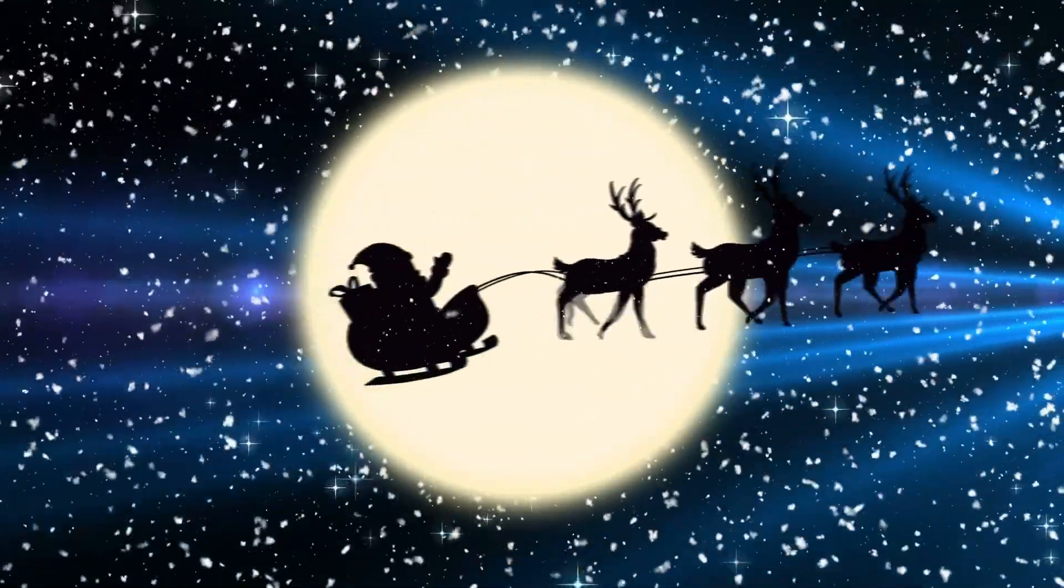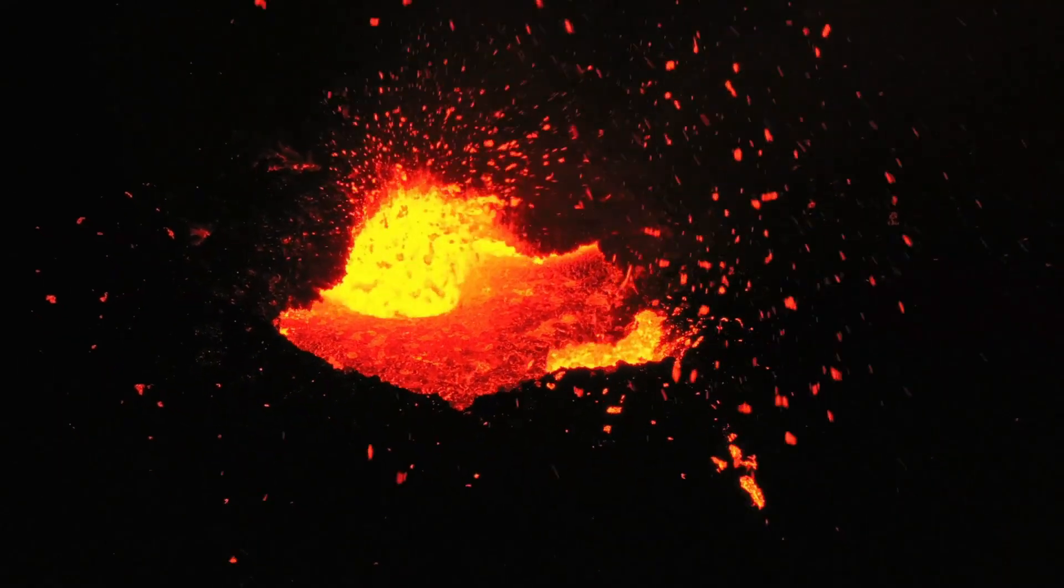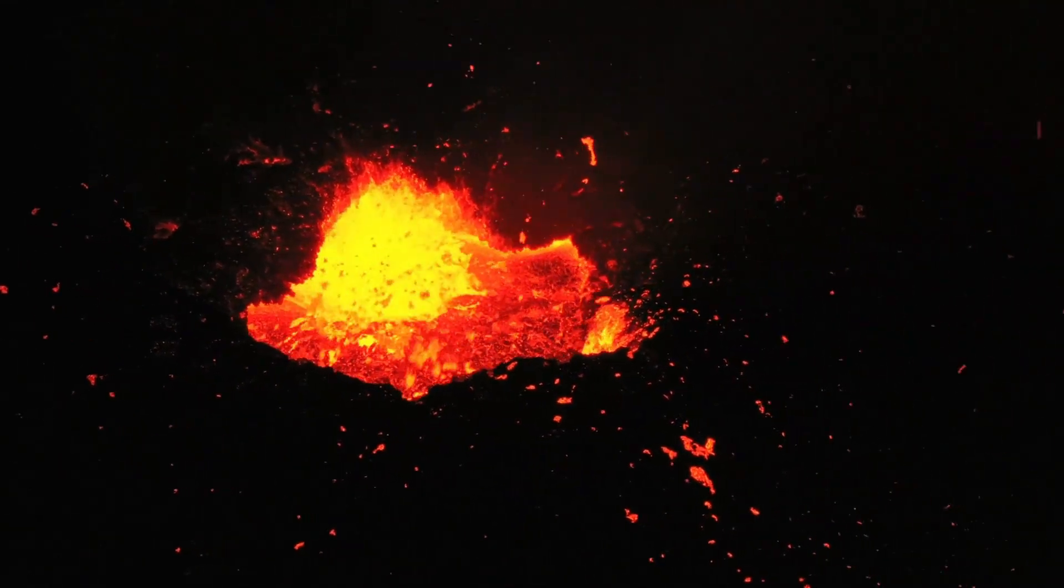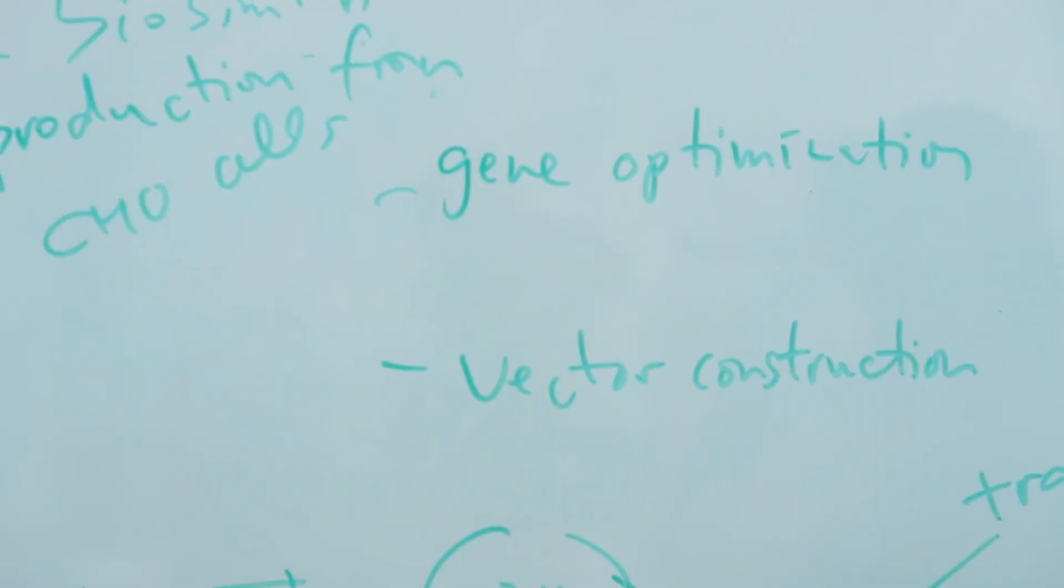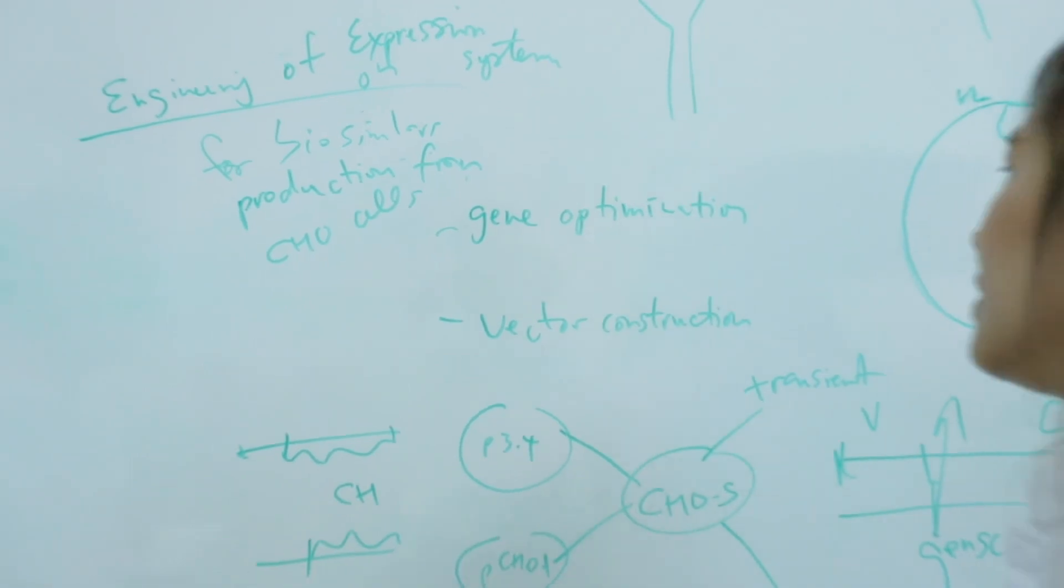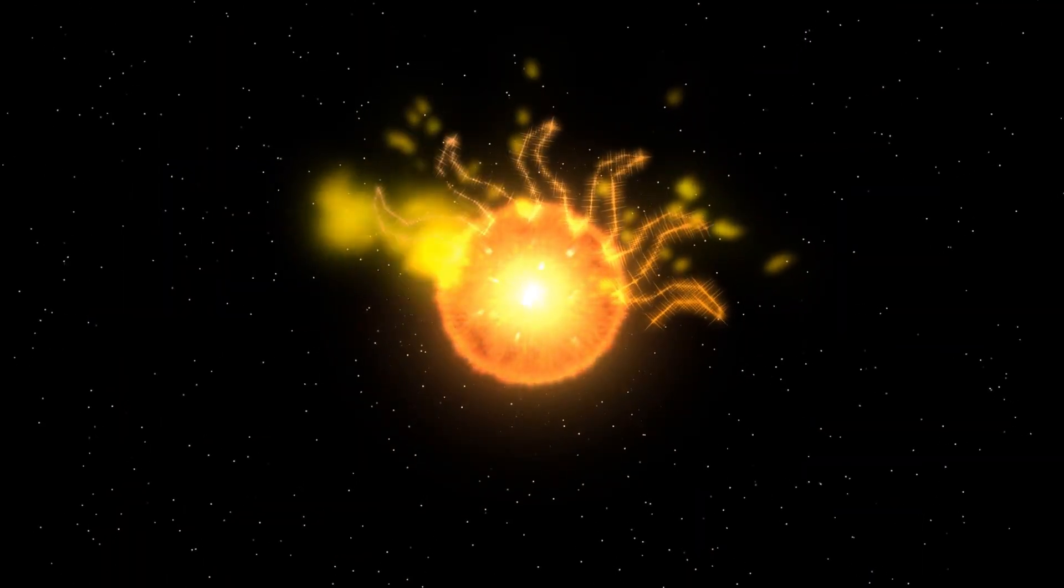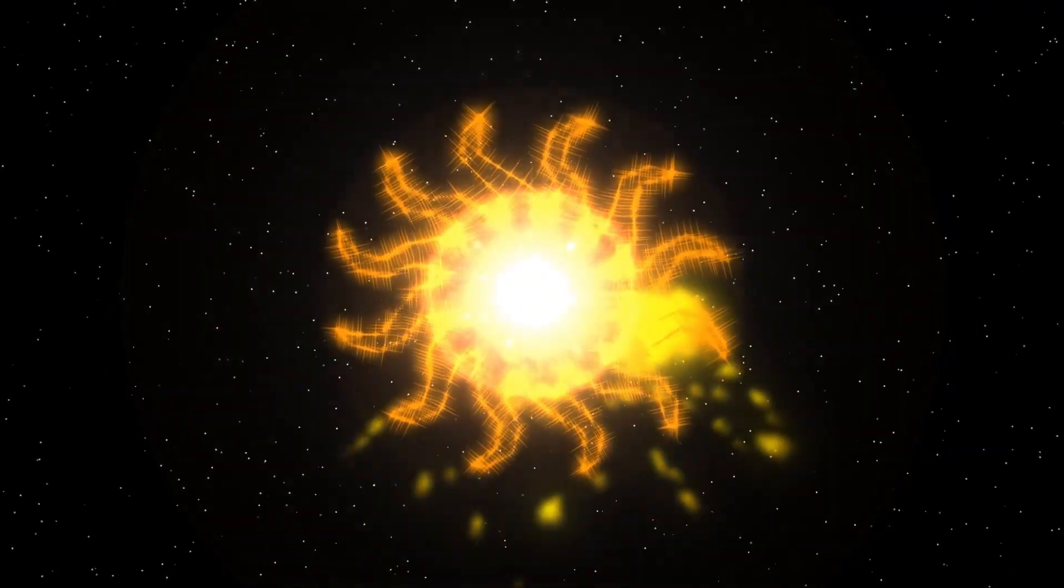Even so, this immense distance doesn't reduce the significance of what's happening with Betelgeuse. On the contrary, it elevates its importance, offering us a rare, real-time opportunity to study the behavior of a massive star in its twilight years. Changes in Betelgeuse's brightness aren't entirely new to astronomers. It's long been classified as a pulsating variable star, meaning it naturally undergoes cycles of expansion and contraction that affect how much light it emits.